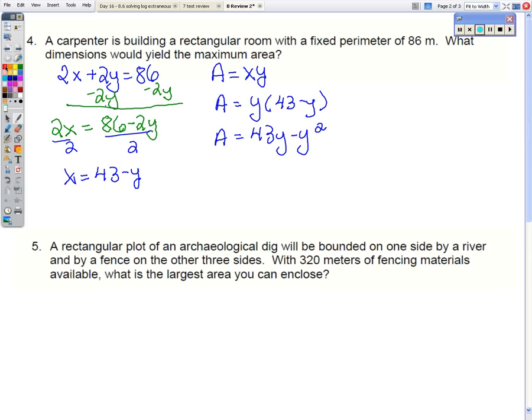Distribute the y. And now to maximize area, we need the derivative of area. Set that equal to 0. I'm going to add the 2y over. And we get y is 21 and a half.